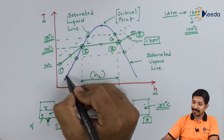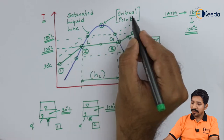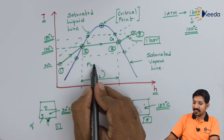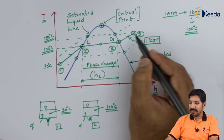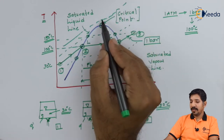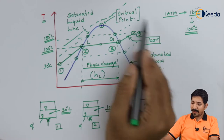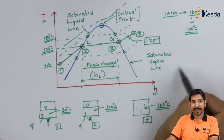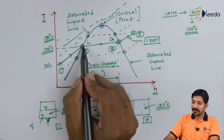This line is the saturation liquid line and this line indicates the saturation vapor line. The peak point is called the critical point, because after that there is no phase change. Beyond the critical point, if we keep increasing pressure and temperature, the liquid-to-gas transition will occur suddenly with no distinct phase change region.